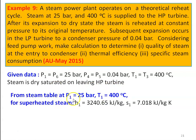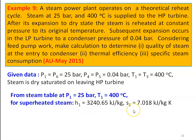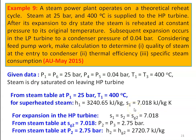Given data: initial pressure P1 = 25 bar, condenser pressure P4 = 0.04 bar, temperature T1 = T3 = 400°C. The steam is dry saturated on leaving the HP turbine. Using the steam table at P1 = 25 bar and T1 = 400°C for superheated steam: H1 = 3240.65 kJ/kg and S1 = 7.018 kJ/kg·K. For expansion in the HP turbine, S1 = S2, and the steam is dry saturated on leaving — so we have S2 = Sg2 = 7.018.